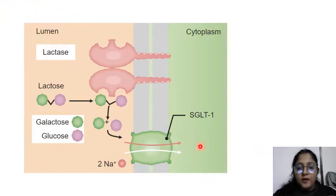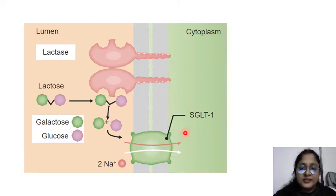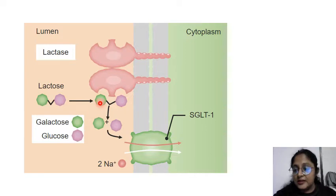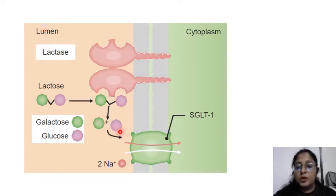For a basic example, consider lactose — here we have the cytoplasm and the membrane. Lactose consists of one form of glucose plus one form of galactose. The lactase enzyme acts on this lactose and breaks it into glucose and galactose, giving one molecule of glucose and one molecule of galactose.